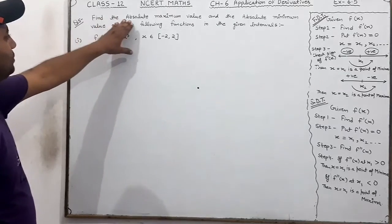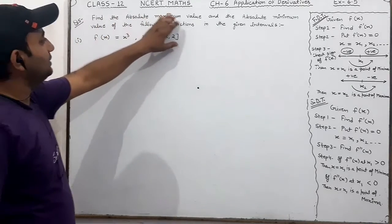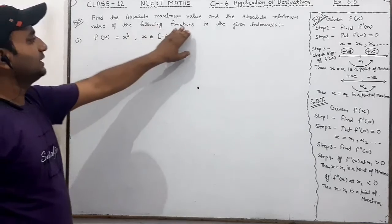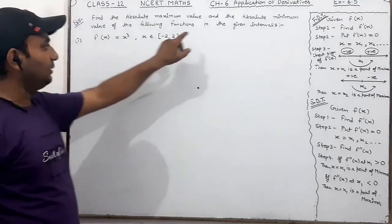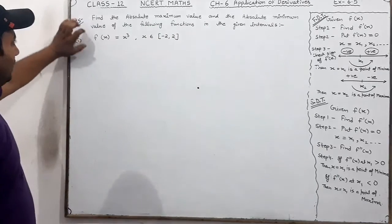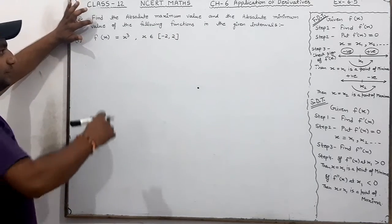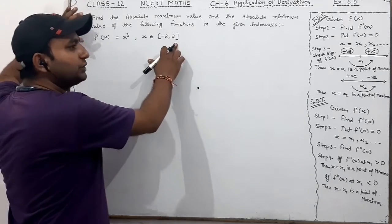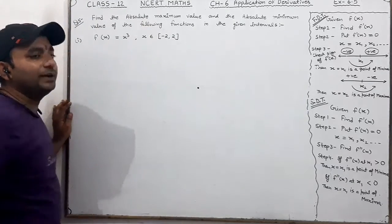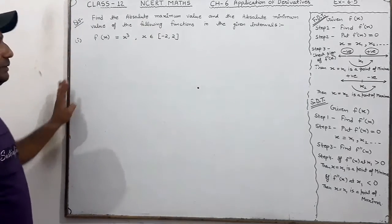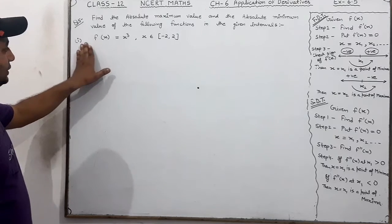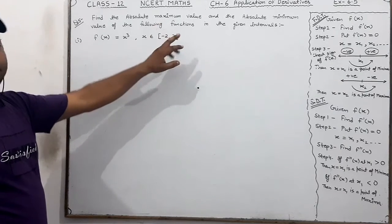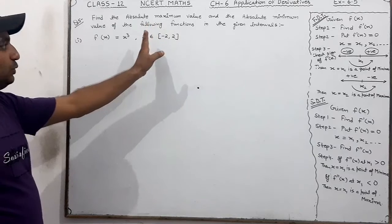Question number 5: Find the absolute maximum value and absolute minimum value of the following functions in the given interval. When we have closed intervals in the question, then you will understand that we have absolute maximum and absolute minimum value. Like in the 4th part, we have closed intervals, so you will understand that absolute minimum and absolute maximum value need to be found.